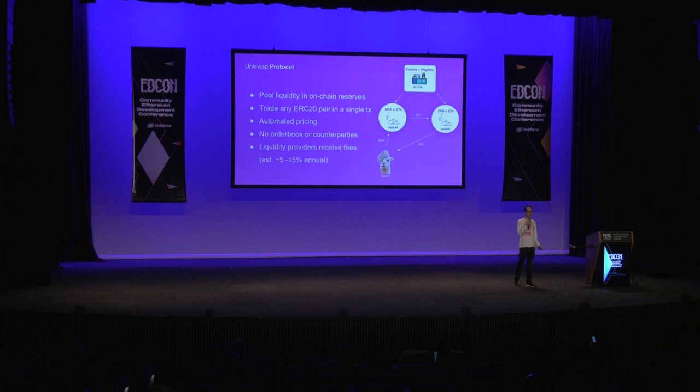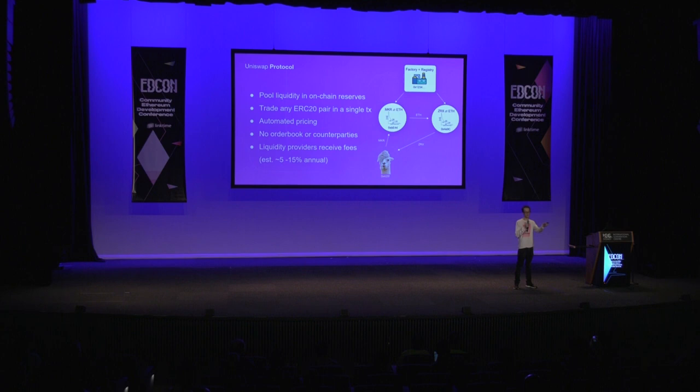The core idea of Uniswap is to make it as easy as possible to swap between Ether and ERC20 tokens. It allows liquidity providers to pool liquidity in on-chain liquidity reserves, and then it automates the pricing. Users can now swap back and forth between Ether and ERC20 tokens.